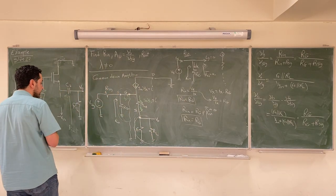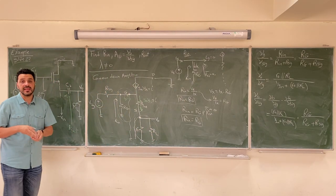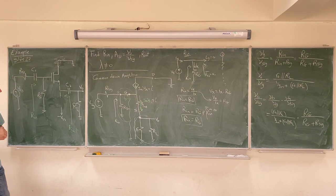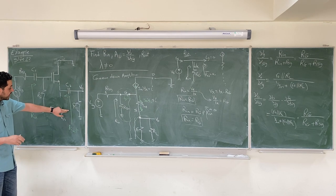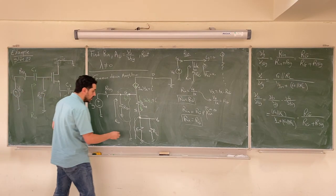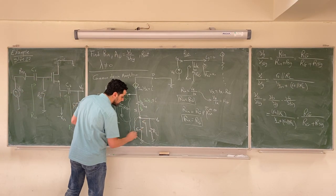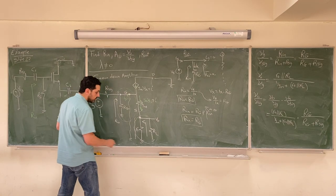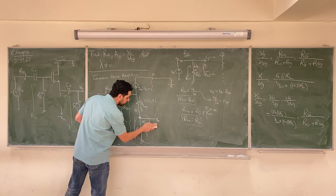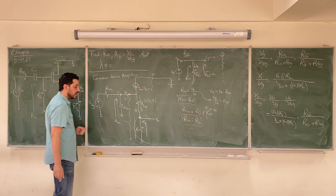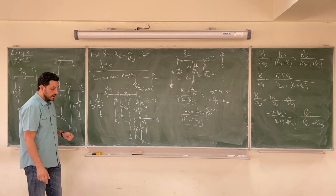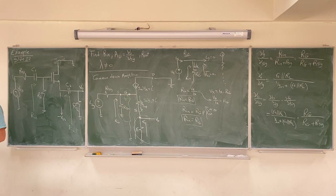Now let's look at the output resistance. We are required to calculate the output resistance looking at this point directly before RL. We need to forget everything after this point — specifically, remove RL — and focus on the Thevenin equivalent resistance seen from there.